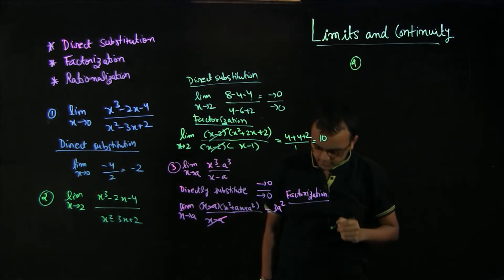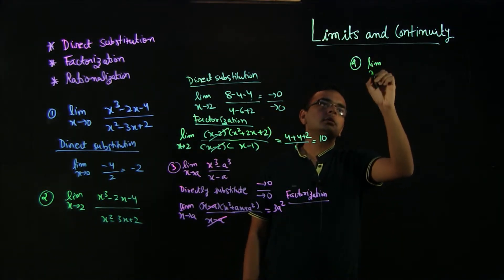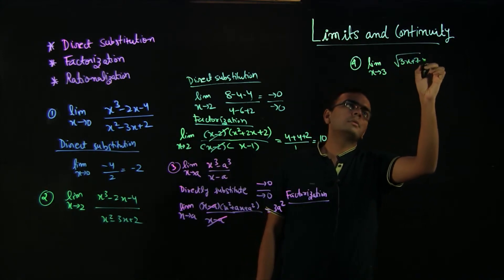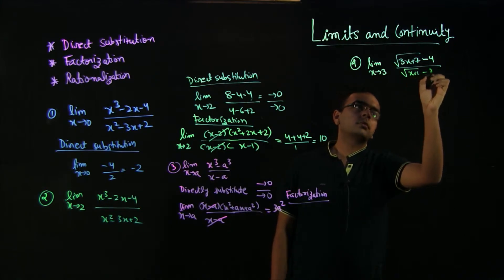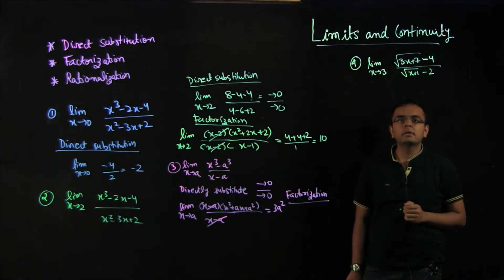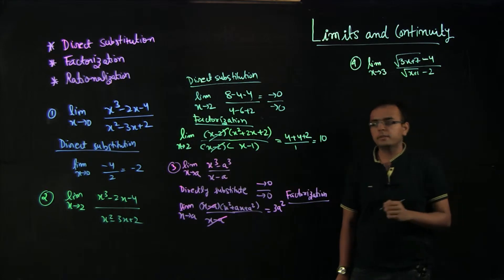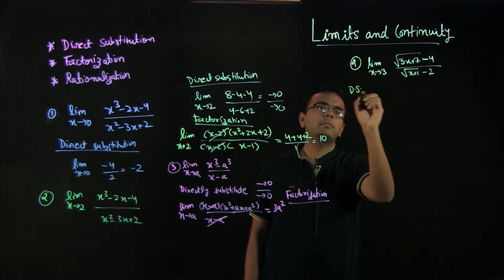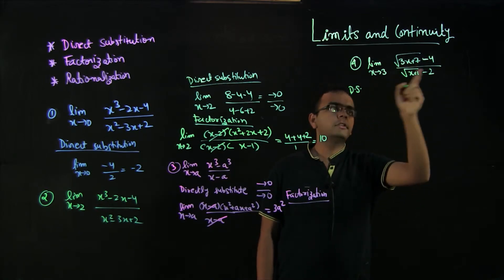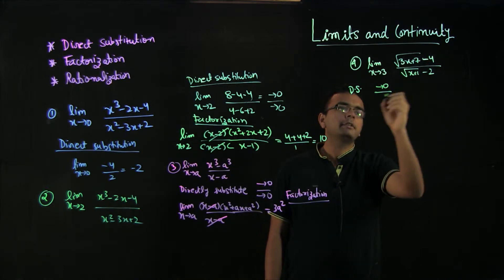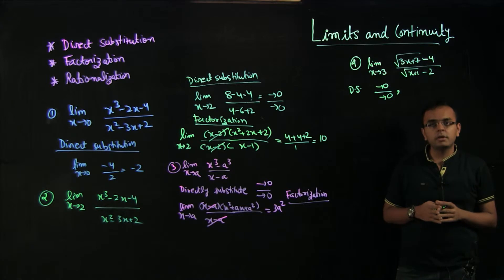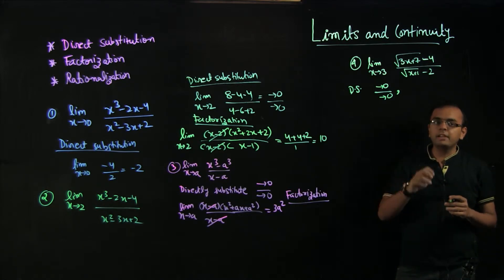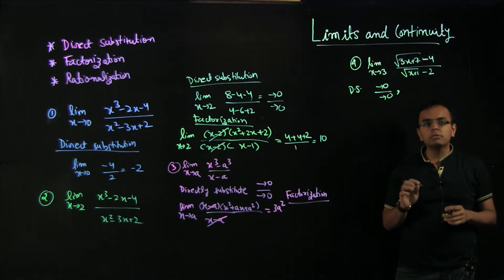The next problem is limit x tends to 3 of (√(3x + 7) minus 4) divided by (√(x + 1) minus 2). First, directly substitute: √(9 + 7) = √16 = 4, so the numerator is 4 minus 4 = 0, and √(3 + 1) = 2, so the denominator is 2 minus 2 = 0. We have a 0/0 form. Factorization is not natural here, but we see a square root minus a constant, which is the classical signal to rationalize, since √x minus a times √x plus a equals x minus a².